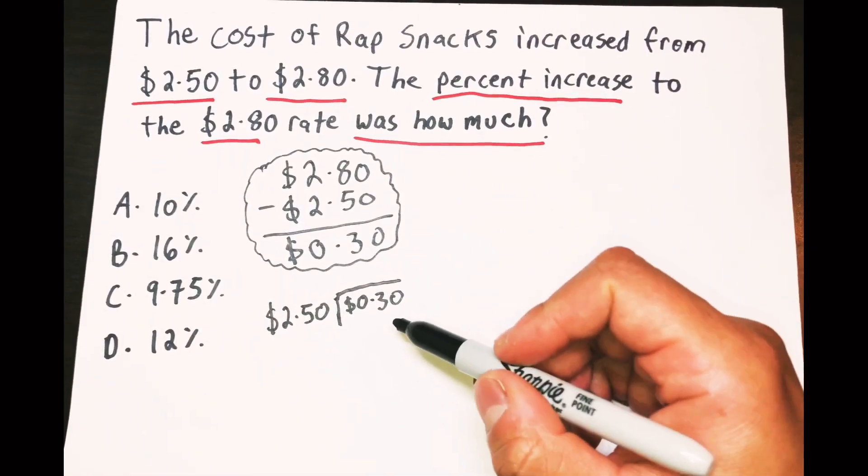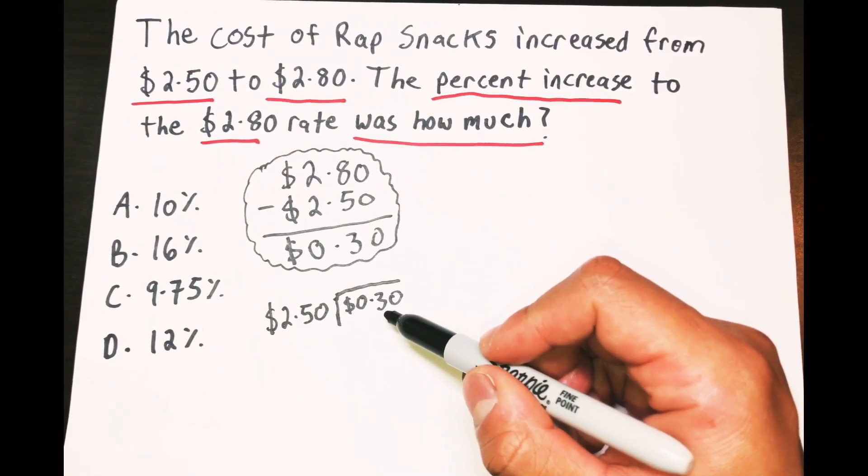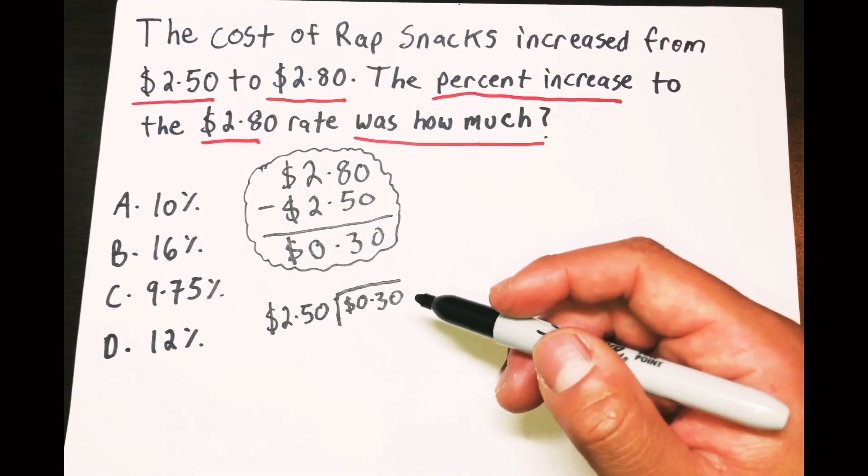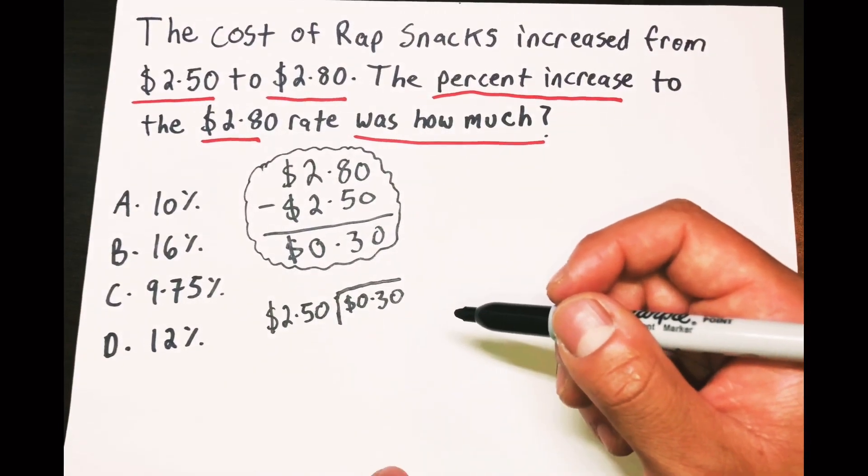You could see it, I could see it, that's too small. You have a small number divided by a big number, that's not gonna help us out, we don't have a calculator.